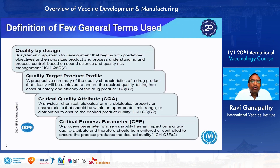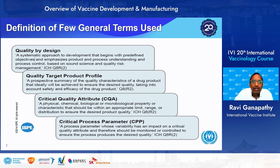Before going further, let's go through a few general terms from ICH Q8 R2. Quality by Design (QbD) is a systematic approach to development that begins with predefined objectives and emphasizes product and process understanding and process control, based on sound science and quality risk management. Target Product Profile (TPP) is a prospective summary of the quality characteristics of a drug product to ensure desired quality, safety, and efficacy. Critical Quality Attribute (CQA) is a physical, chemical, biological, or microbiological property that should be within an appropriate limit or range to ensure desired product quality. Critical Process Parameter (CPP) is a process parameter range that should meet the CQA.